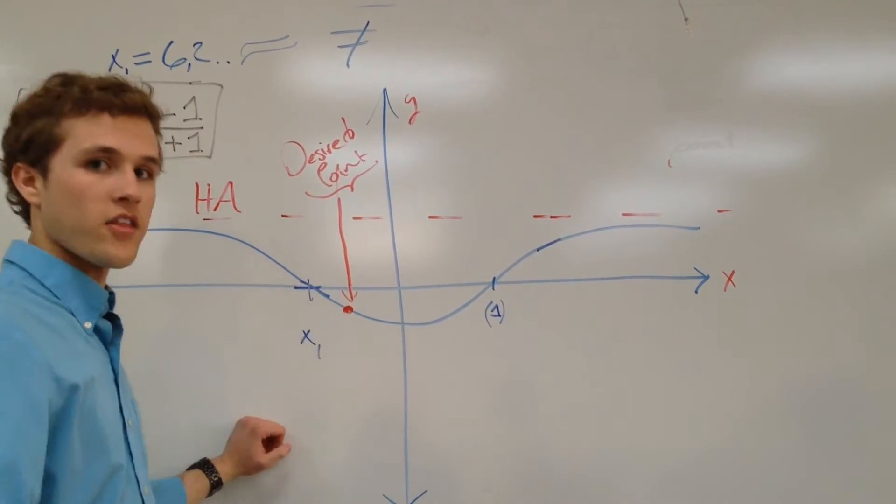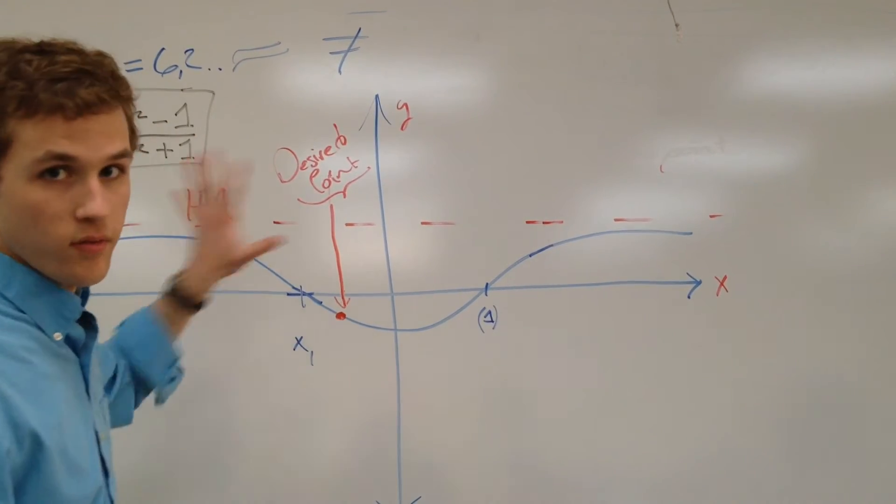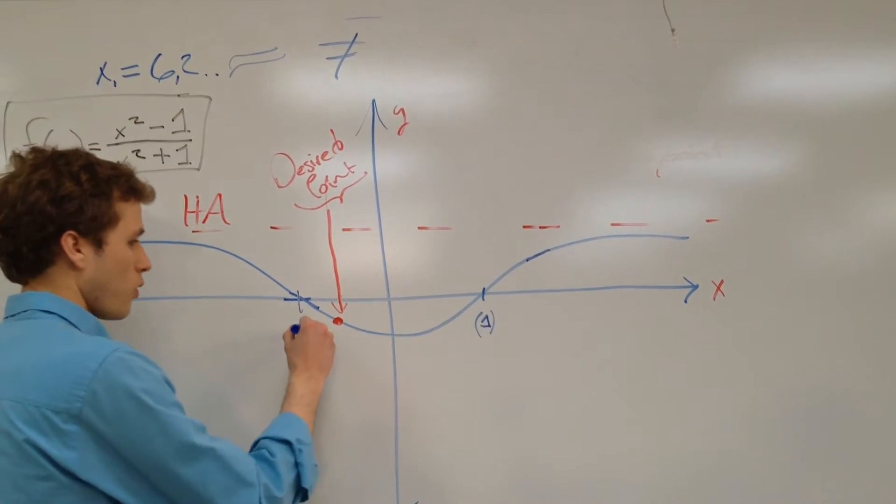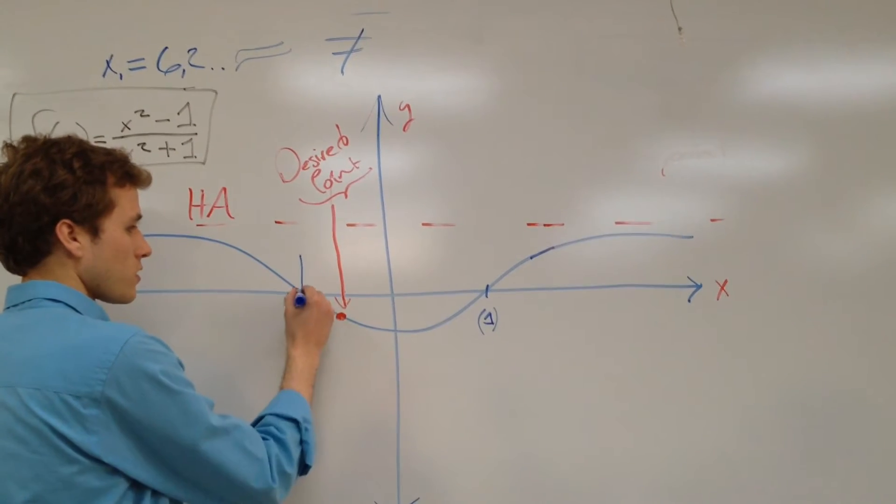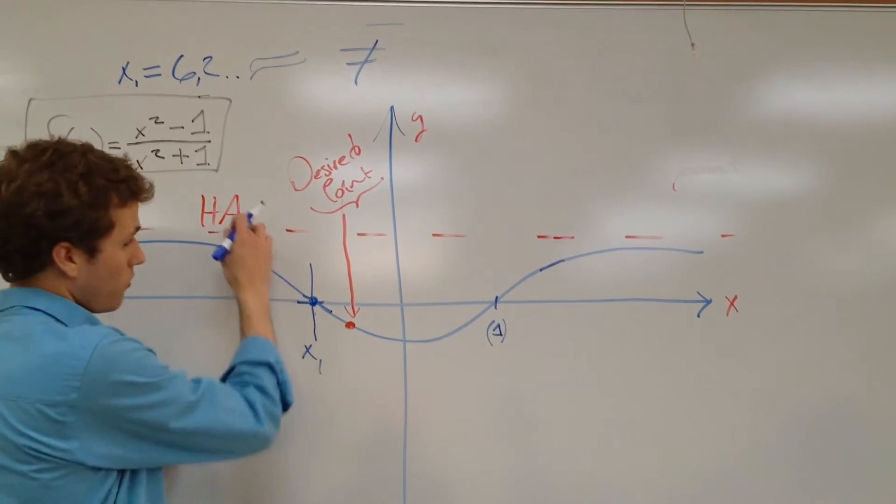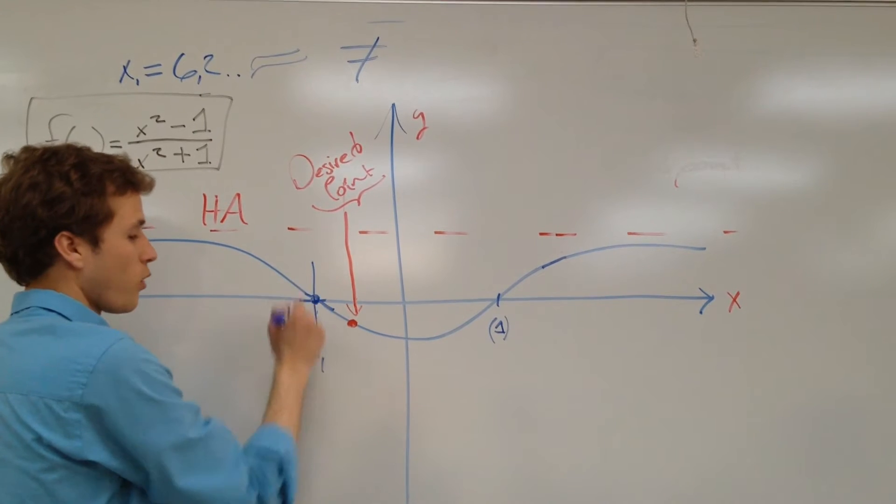What we're doing mathematically, when we do Newton's method, is we're taking the derivative at that point. And so x1 hits the slope, or hits the function, hits f of x at this point right here.